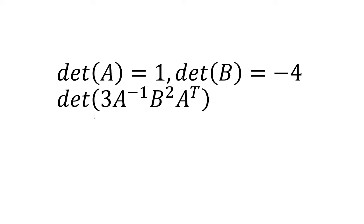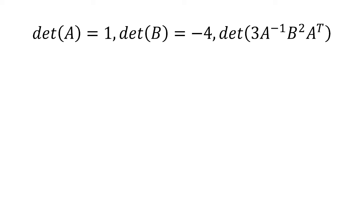In this video, we want to find the determinant of 3 times A inverse times B squared times A transpose, given that the determinant of A is 1 and the determinant of B is negative 4.